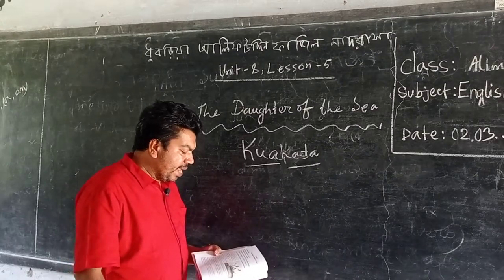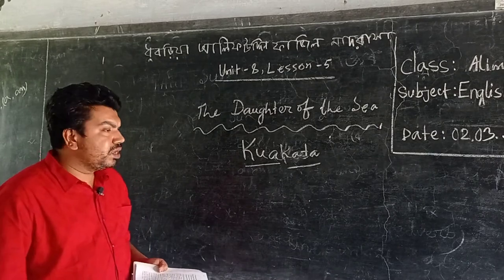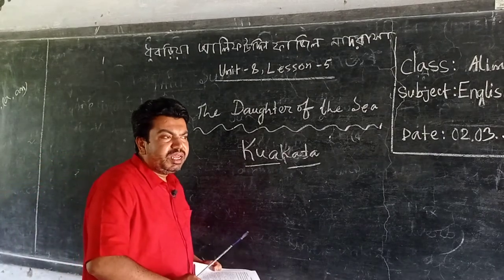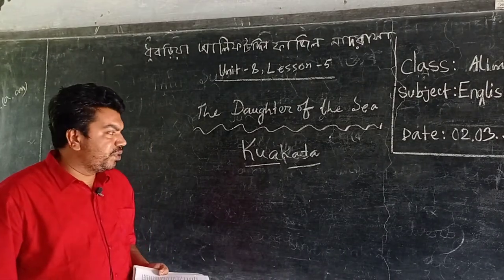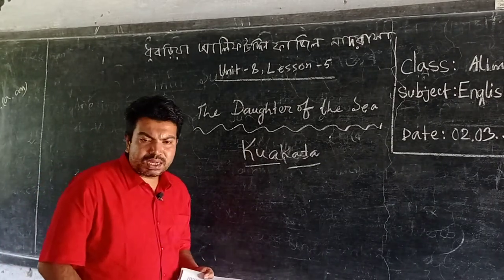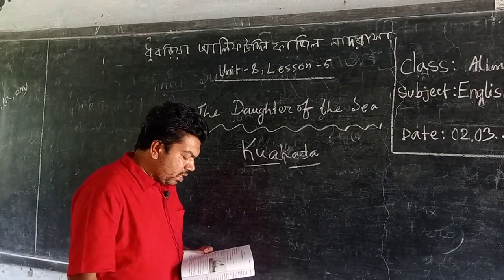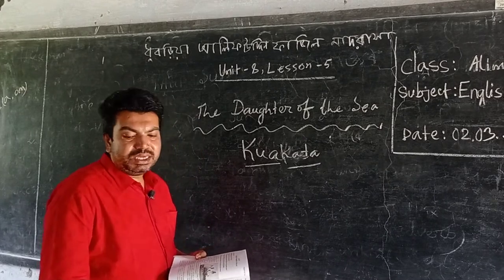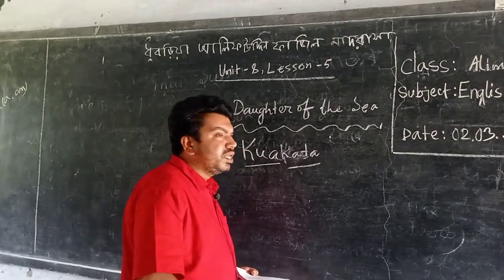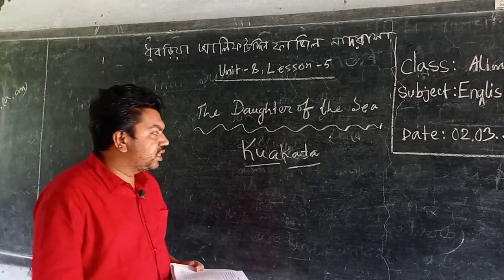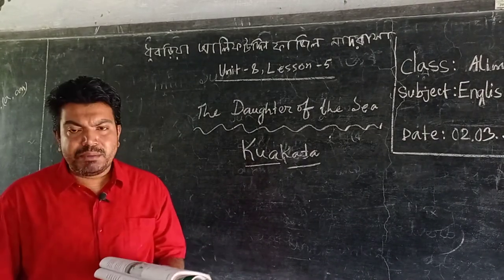It is an excellent combination of picturesque natural beauty. If we want to spend our vacation, we can go to Kuakata to enjoy the scenery. The sandy beaches along the sea shore and the shimmering expanse of water of the Bay of Bengal make it a very fine natural scene.